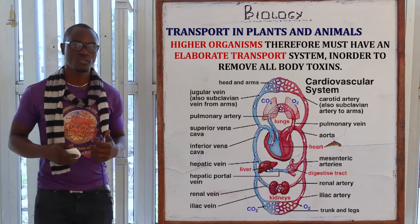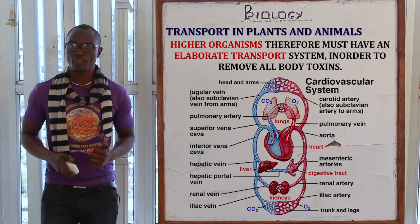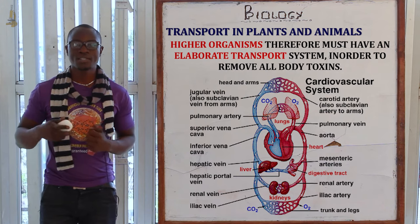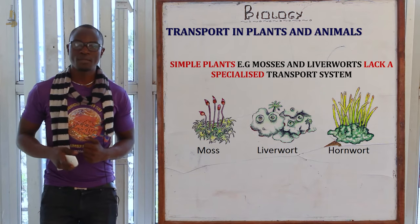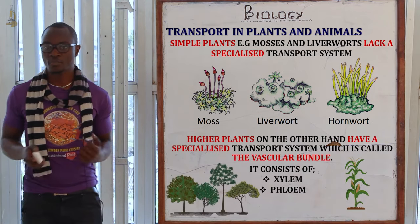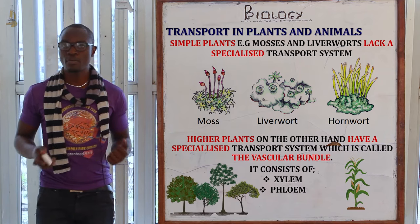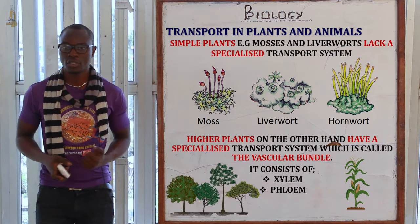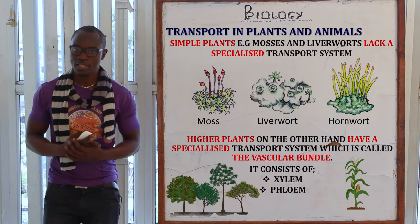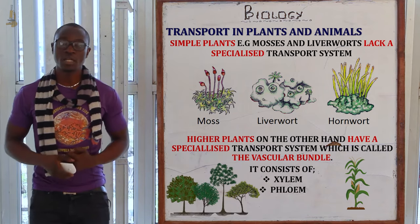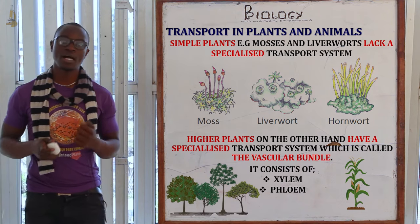Because their bodies contain very many cells and very many features, higher organisms must have an elaborate transport system. Simple plants like mosses and liverworts also lack a specialized transport system, while higher plants like the pine tree have a specialized transport system. This specialized transport system is mainly the vascular bundle, which comprises the xylem and the phloem.